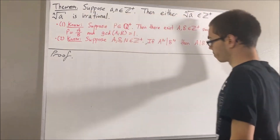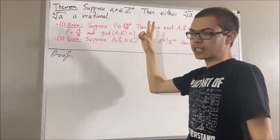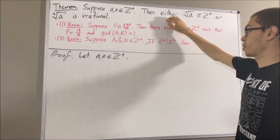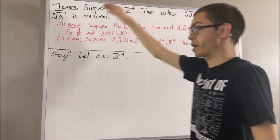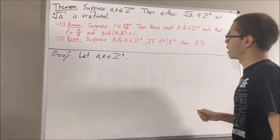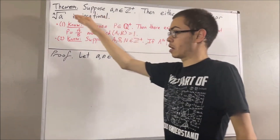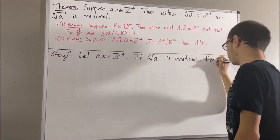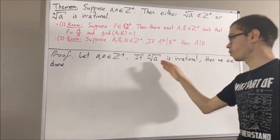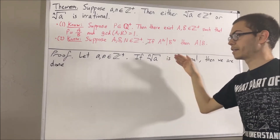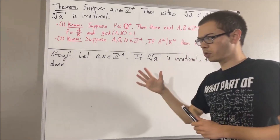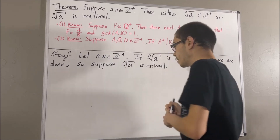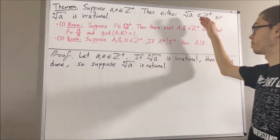But now, let's get into proving this theorem. To start out the proof, let's give ourselves two positive integers, a and n. The whole goal from here is to prove that either the n-th root of a is a positive integer, or the n-th root of a is irrational. Now, if the n-th root of a happens to be irrational, then we're done. So that covers the case where the n-th root of a is irrational. The only other case we could have is that the n-th root of a is rational, so let's suppose that the n-th root of a is rational. In this case, we are going to show that the n-th root of a must be a positive integer.